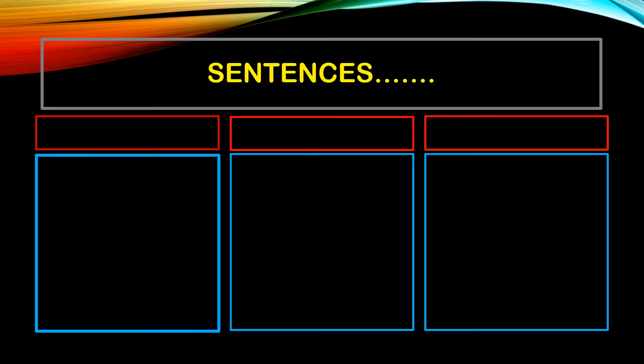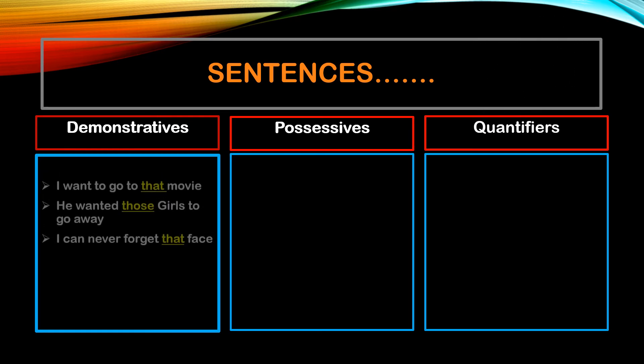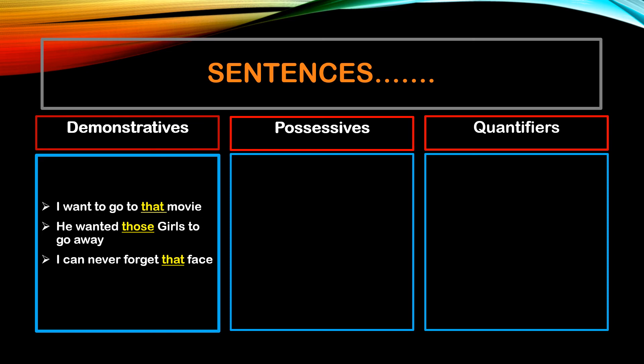Let us see some sentences from the demonstrative determiners, the possessive determiners, and the quantifiers determiners. Demonstrative determiners: I want to go to that movie. He wanted those girls to go away. I can never forget that face. Please see the sentences carefully. You have 'movie' with 'that' before it, 'girls' with 'those' before it, 'face' with 'that' before it.